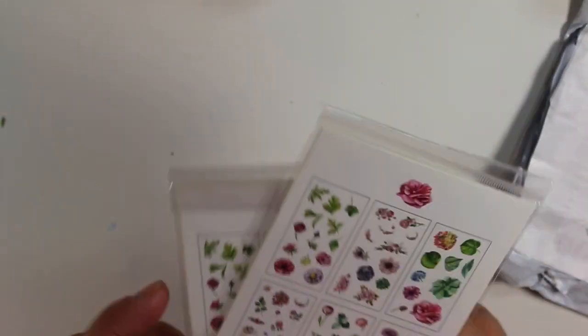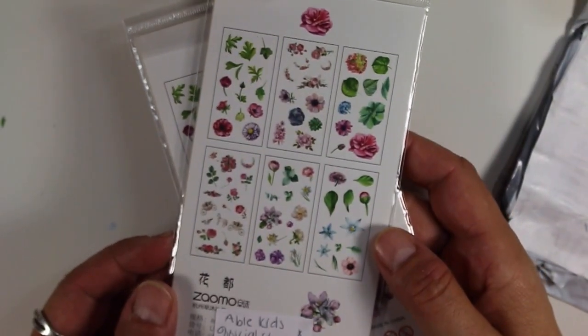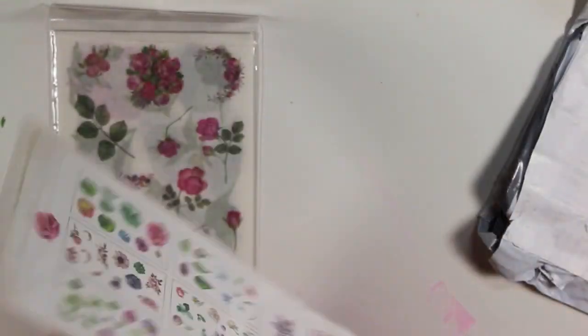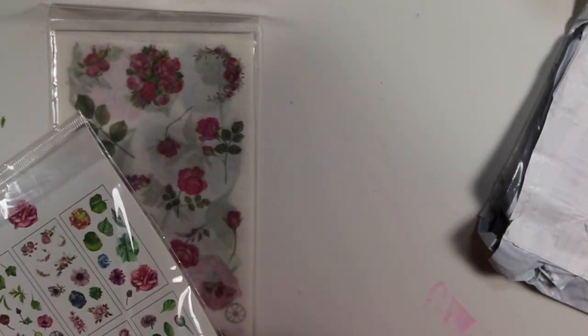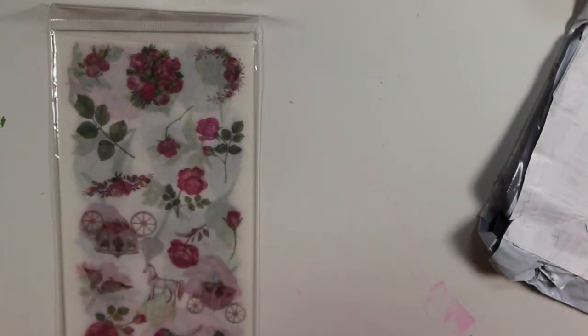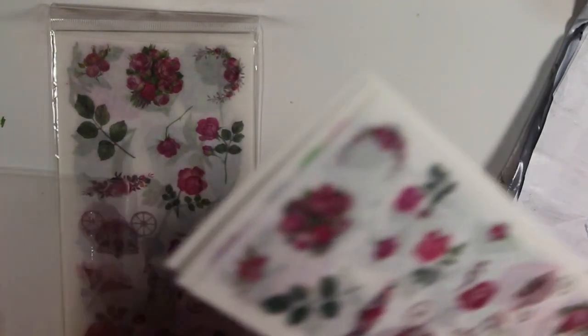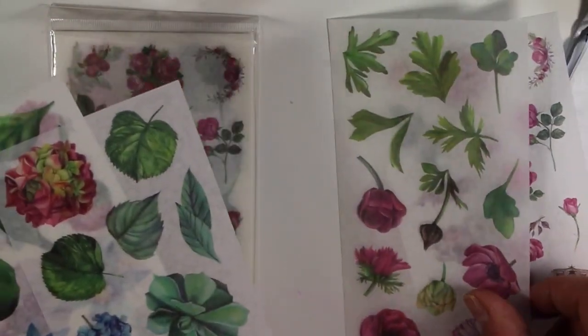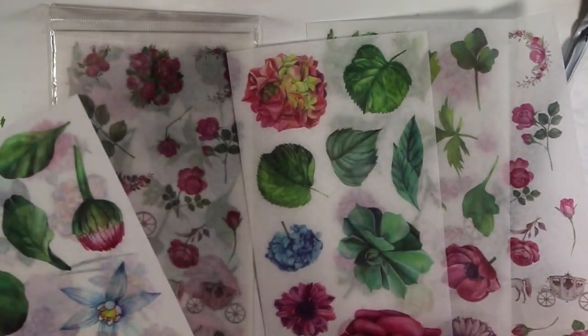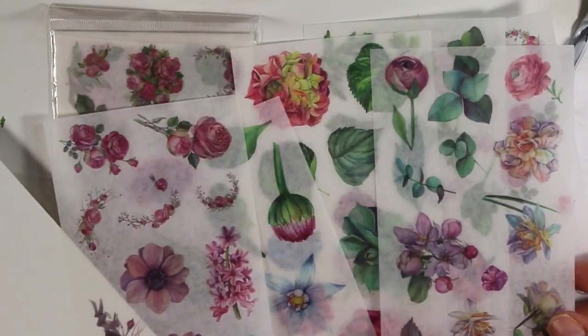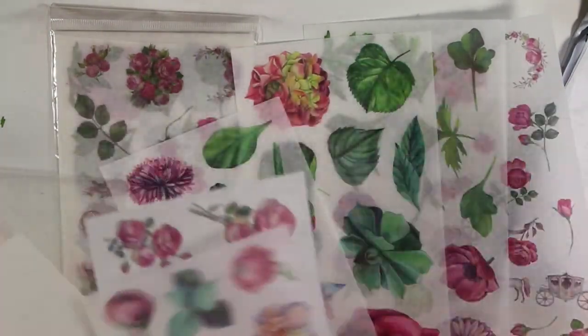So these are from the Able Kids store. They were $0.79 a pack. Let's see how many sheets are in here. They are washi stickers. So you have six sheets.